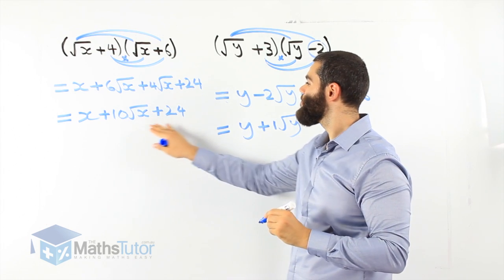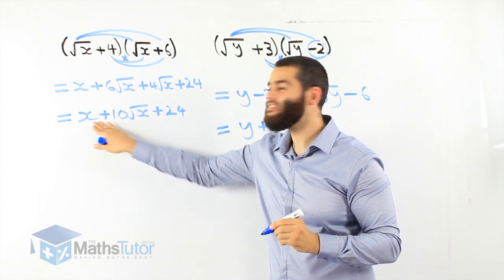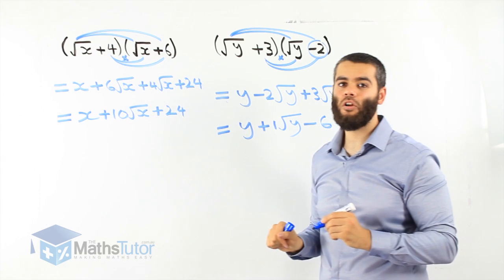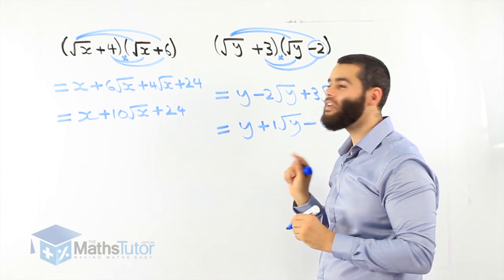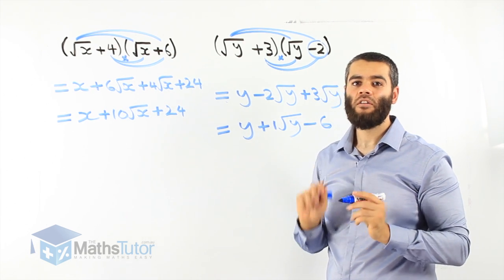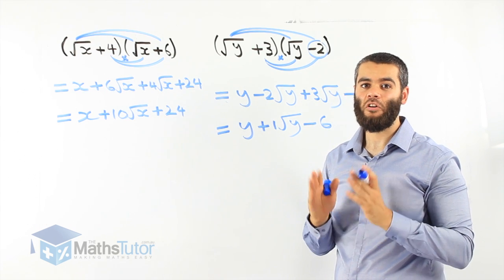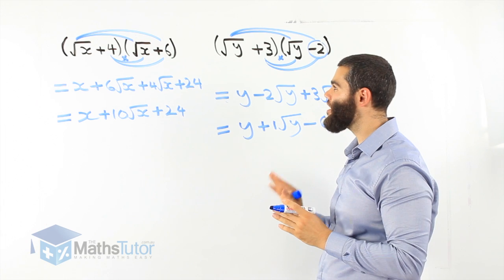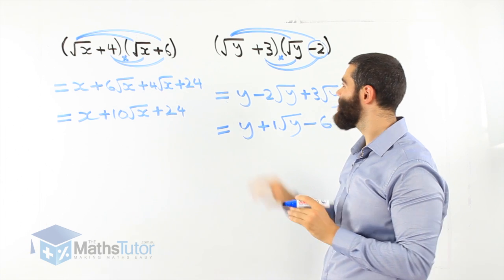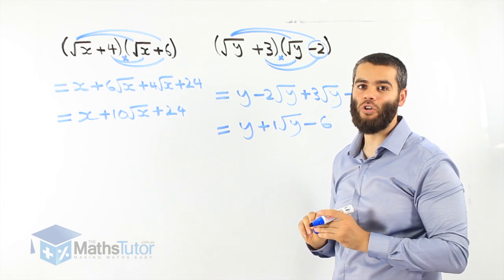So now we have our final answer for this binomial product as well. Surds and algebra follow similar rules. Always remember that with binomial products we are multiplying two terms with two terms.